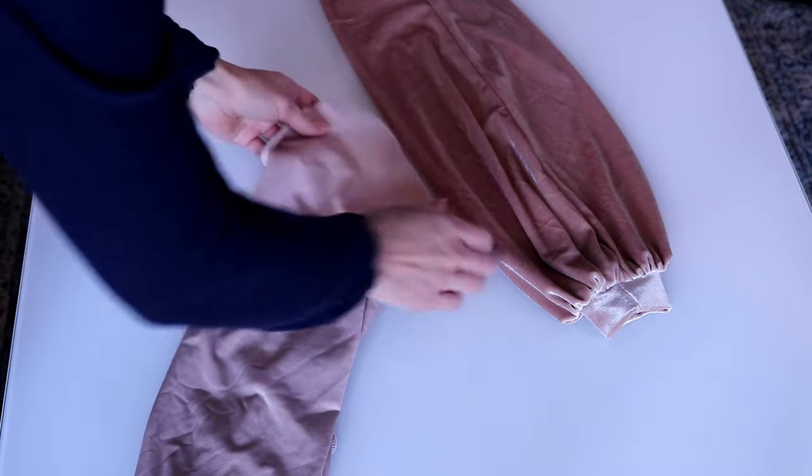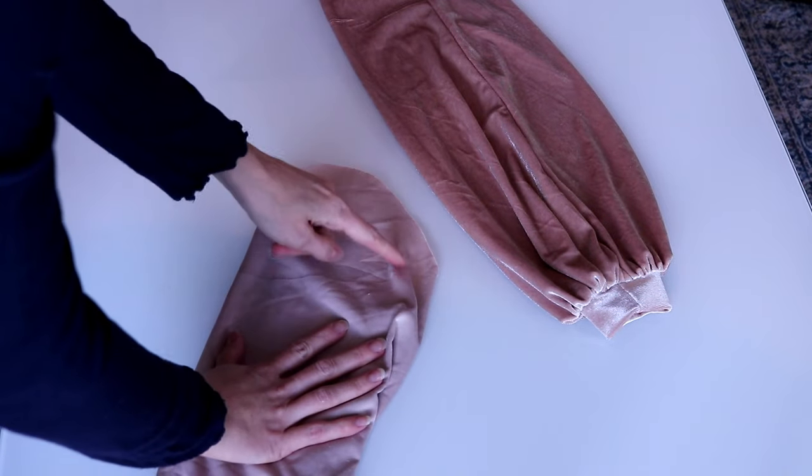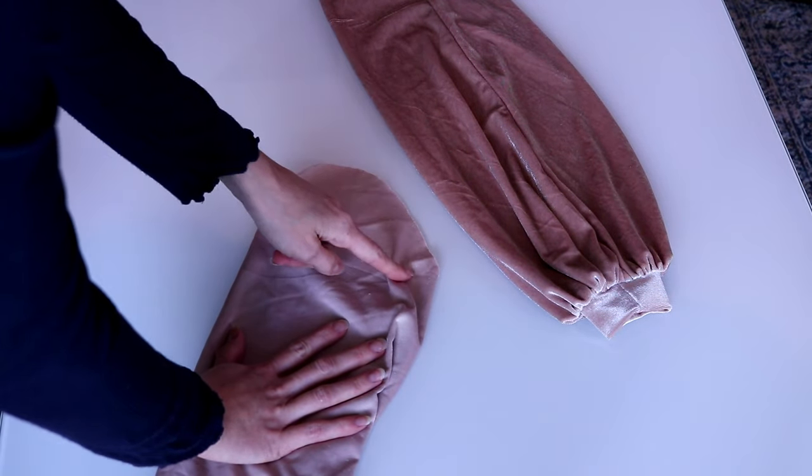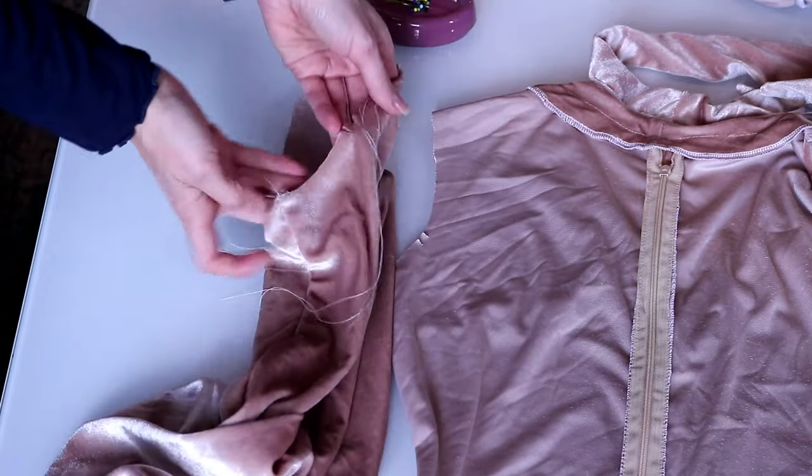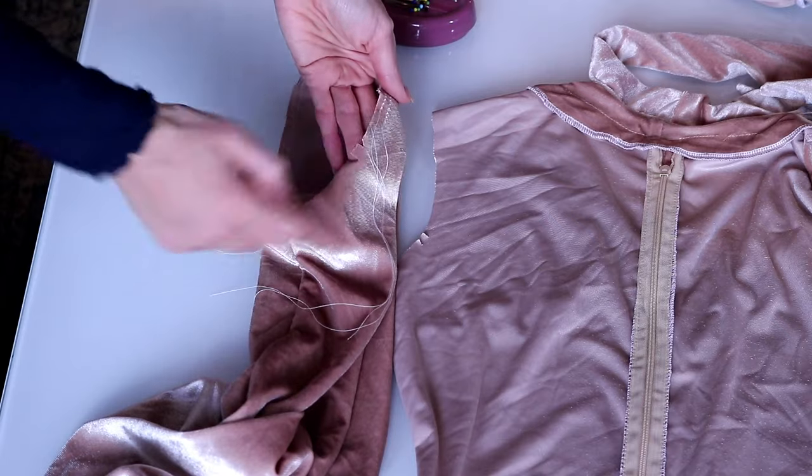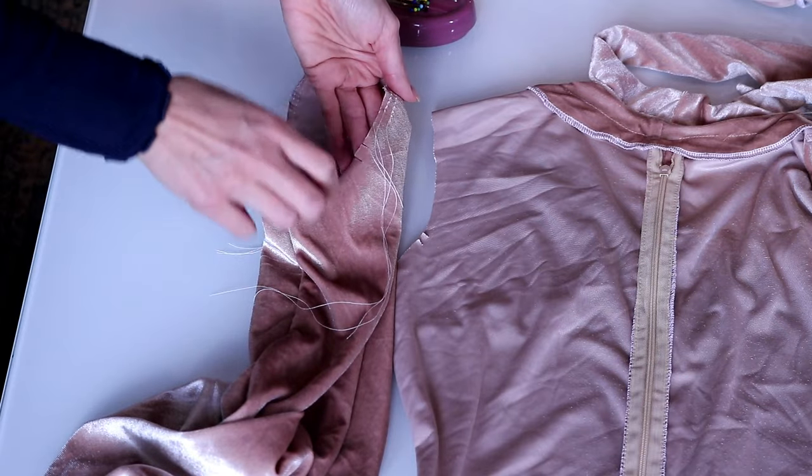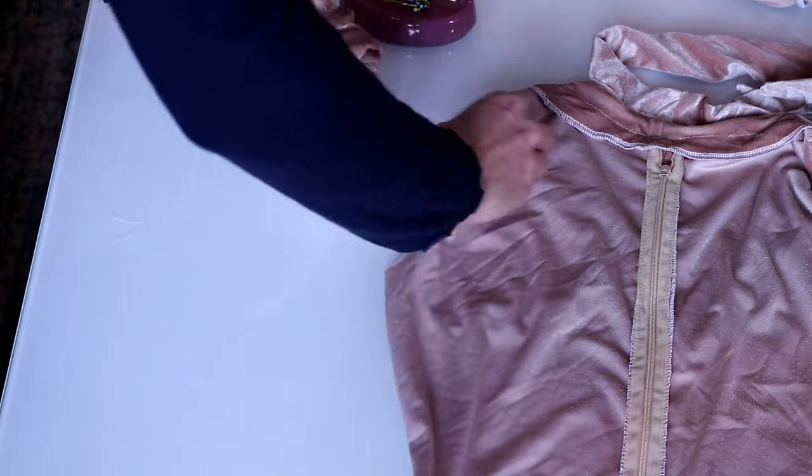Now ease-stitch the sleeve cap between the small circles by stitching two parallel rows using long machine stitches. Leave long thread tails and do not backstitch. Place the sleeve inside the armhole matching notches and seams.